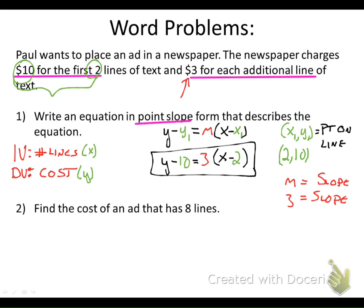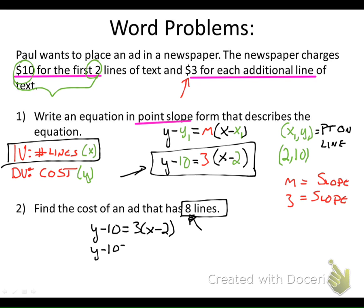Now to find the cost of an ad that has eight lines, we can use this equation to do that. We have Y minus 10 equals 3 times the quantity of X minus 2. They tell us eight lines - well, our number of lines is an X value, so all I have to do is substitute 8 into this equation and then solve for Y, solve for the cost.